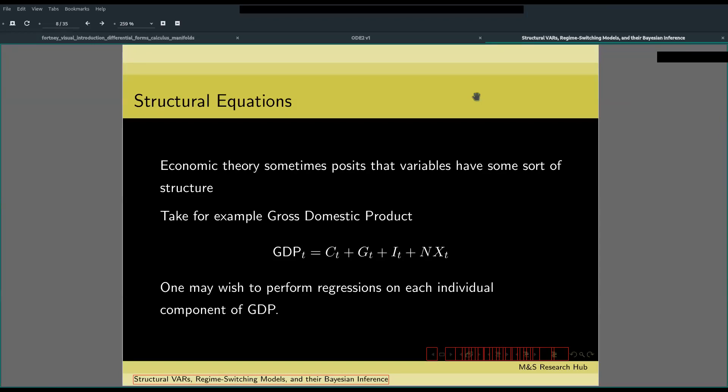Moving forward, economic theory requires empirical validation, and economic theory sometimes posits that variables have some sort of structure. Take, for example, GDP: GDP = C + G + I + NX. We have consumption, government expenditure, private investment, and net exports. One might wish to perform regressions on each component individually. For example, in regressing consumption, we might regress consumption for a cross-section dataset for each federal state of Germany, same with government expenditure and the rest. In order to calculate GDP from these estimates, we need to use structured equations modeling.